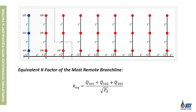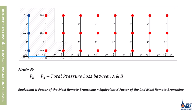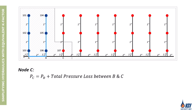With the pressure at node A calculated, we determine the equivalent K factor of the most remote branch line by dividing its total flow rate by the square root of the pressure at that point. In the next step we calculate the pressure at node B. The question then arises: how much flow will be discharged from sprinklers 104, 105, and 106 on the second most remote branch line? Rather than starting the calculation from sprinkler 104, we simplify the process using the equivalent K factor concept. Since the second most remote branch line is identical to the most remote one in pipe size, length, sprinkler count, K factor, and number of sprinklers in the design area, we apply the same equivalent K factor. With the pressure at node B known, we easily calculate the total flow rate for this branch line.